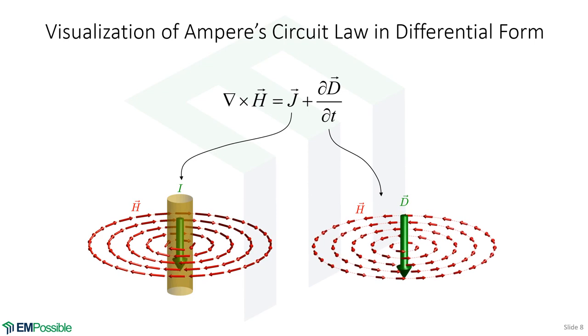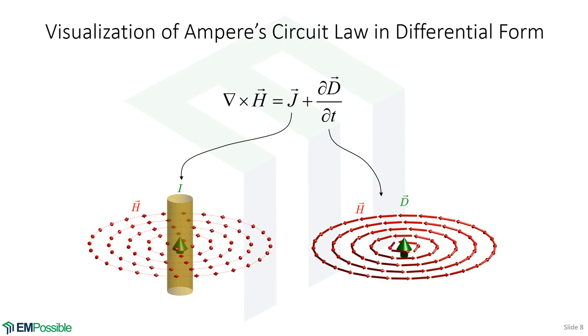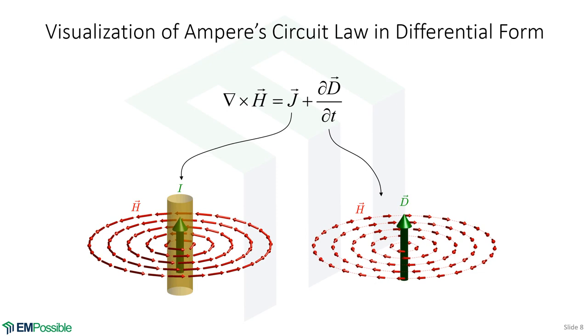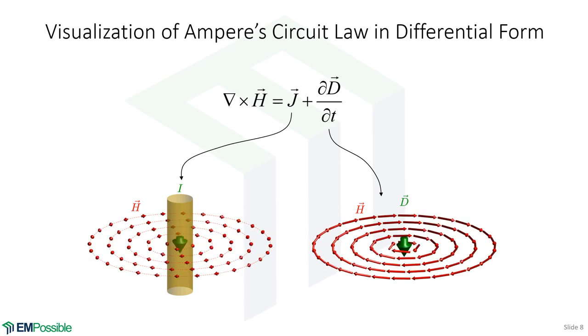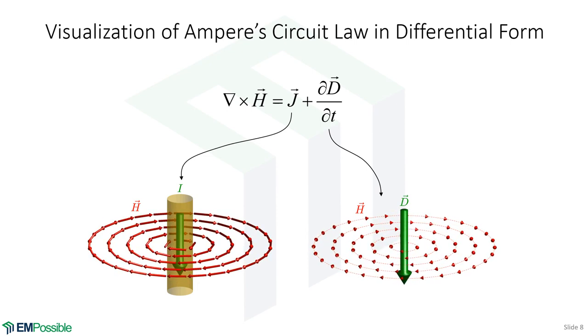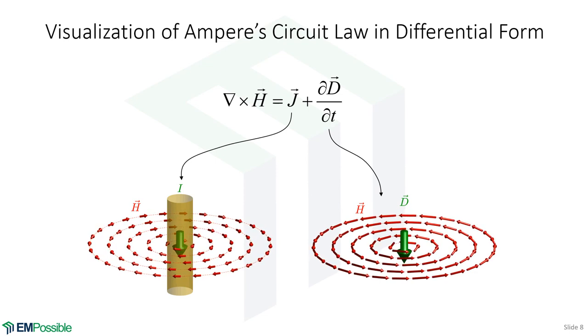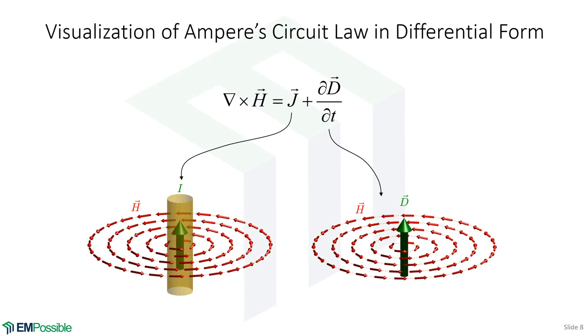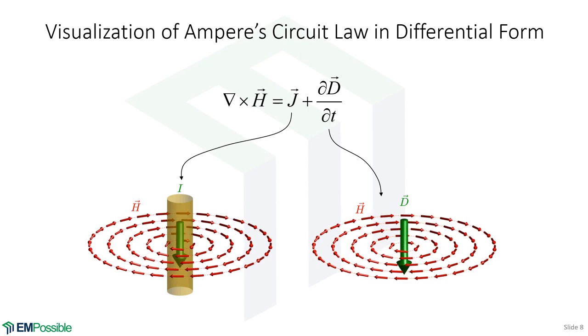The more rapidly it's changing, the stronger that magnetic field. And of course, whether that's changing upward or downward, that will change the directionality of the magnetic field as well. So they behave a little bit different. But in general, we have magnetic fields circulating around both currents and time-changing electric flux.